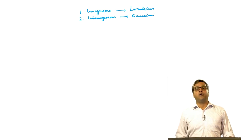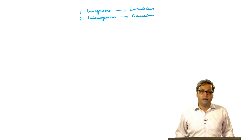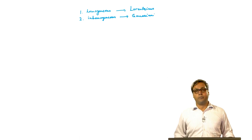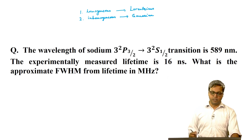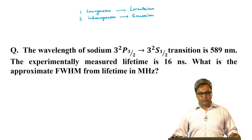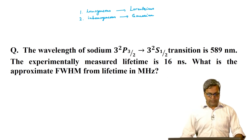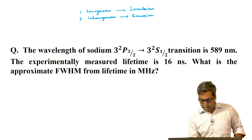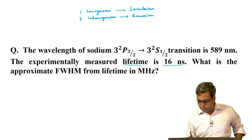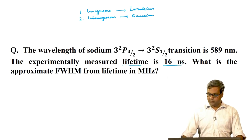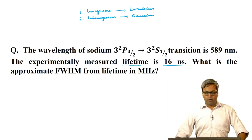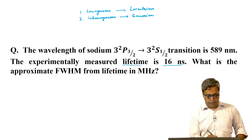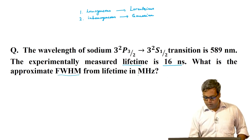Before we start a new topic in today's lecture, let us first look into a problem that involves line shape functions. The question is: the wavelength of a certain transition of sodium is 589 nanometers. The experimentally measured lifetime is 16 nanoseconds. What is the approximate full width at half maximum (FWHM) from lifetime, in megahertz?